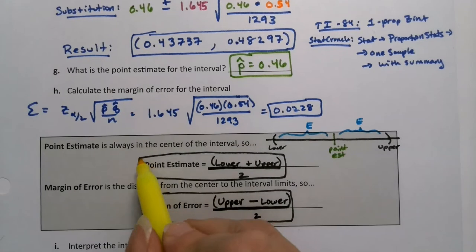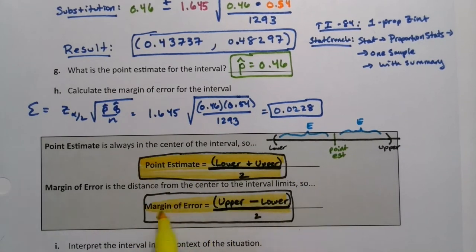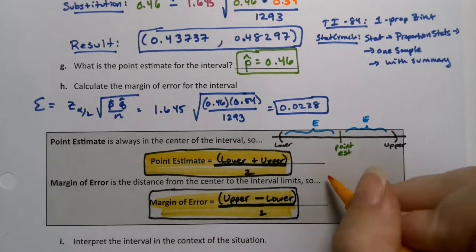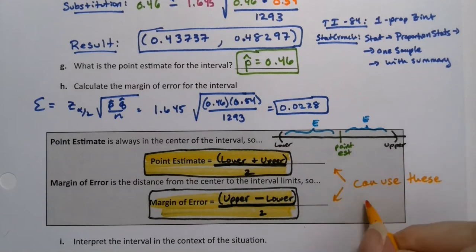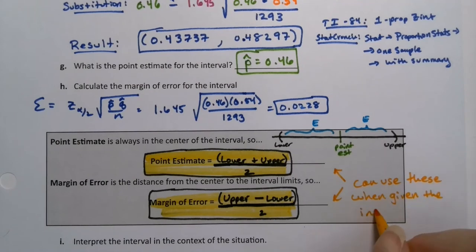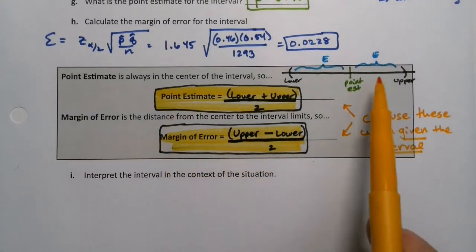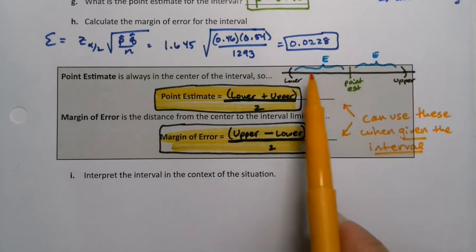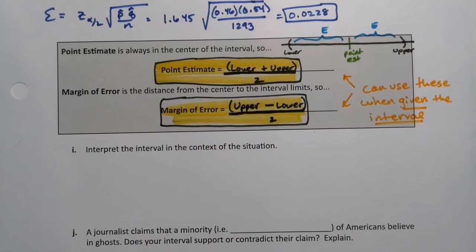So these are some extra formulas for the point estimate and the margin of error that you can use when you're given the interval. So if you're given the interval and you're asked to find the margin of error, this is how you can do it. You could find the point estimate because that's the middle of the interval, and you could find the error because that's the distance from the middle out to the edges. They're handy to have — good thing to put on your note sheet. I'll star them even.